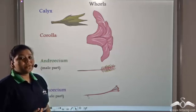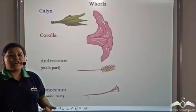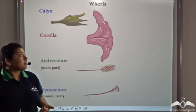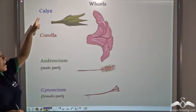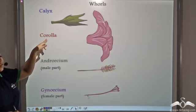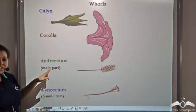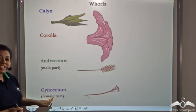So, there are four whorls of a flower: calyx, corolla, androsium, and gynecium.